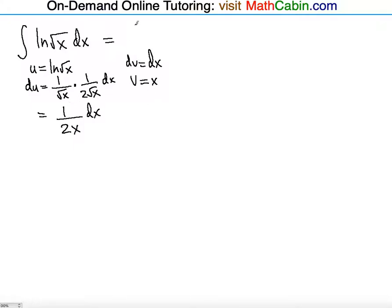So now uv. uv is going to be x ln of square root of x. Minus vdu. Minus the integral of the vdu. So the integral of 1 half that we can place outside the integral. And then v times du is x divided by x dx, because you're essentially multiplying the x with the 1 over x fraction. We already placed 1 half outside.